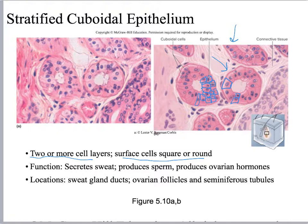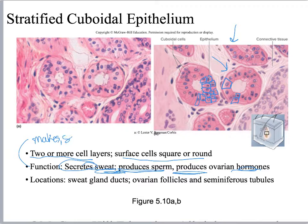Functionally, stratified cuboidal has the same function as simple cuboidal — it makes and secretes things like hormones and sweat. Where do you find it? Types of sweat glands, ovarian follicles, and seminiferous tubules — that's where you make your sperm.